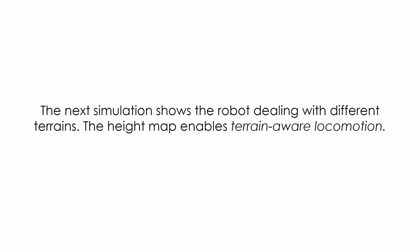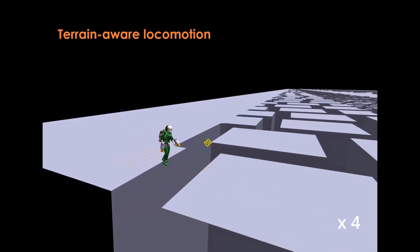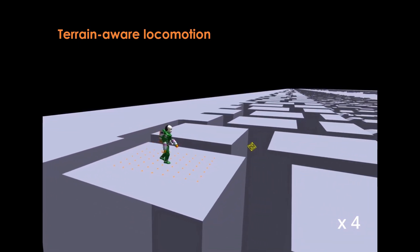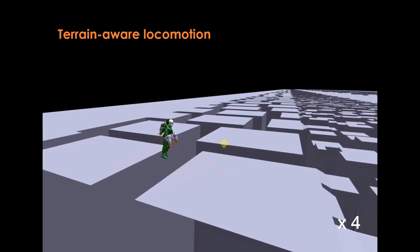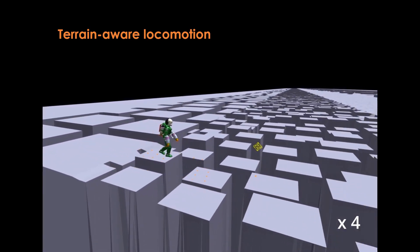In this scenario, the robot deals with diverse terrains such as flat and rough terrain and stepping stones. Using terrain observation, the robot learns when to use aerial or walking mode without any constraint on the form of locomotion.